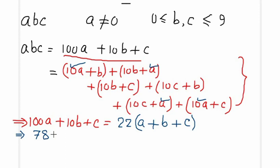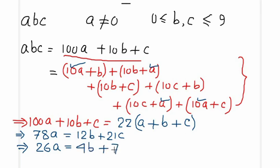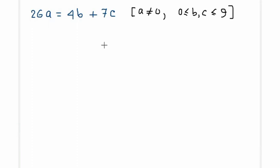After simplification, we find 78A = 12B + 21C. Dividing throughout by 3 gives us the key equation: 26A = 4B + 7C, with the condition that A ≠ 0 and B and C are whole numbers between 0 and 9.